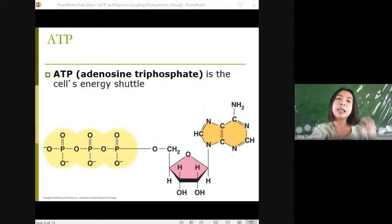Once again, ATP stands for adenosine triphosphate. They are the cells energy shuttle. ATP is composed of ribose or the sugar, adenosine or the nitrogenous base, and three phosphate groups.